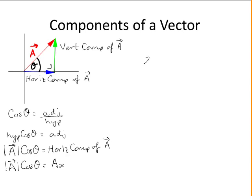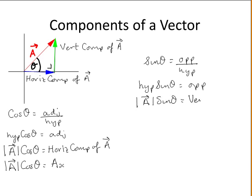You can also find the vertical component, so the sin of theta is equal to the opposite over the hypotenuse. Multiplying both sides by the hypotenuse gives this. The hypotenuse is equal to the length of a times the sin of theta, and the opposite is the vertical component of vector a. So the modulus or length of vector a times the sin of theta is equal to the vertical component of a, and you can think of this as the component of a in the direction of y.